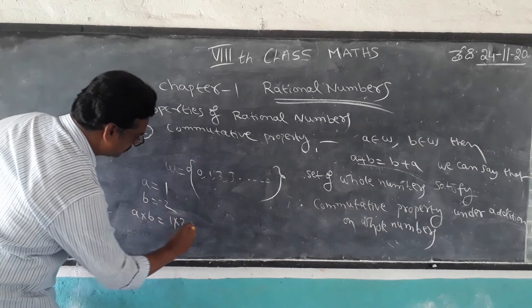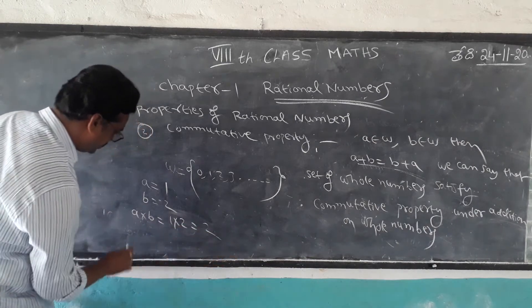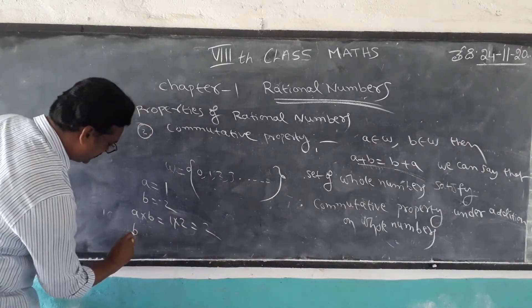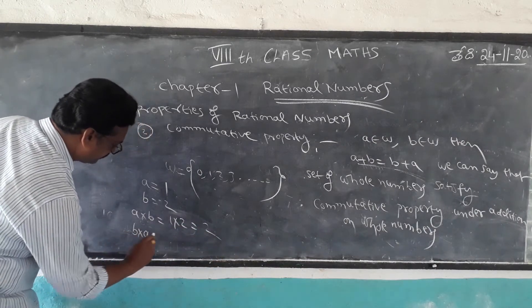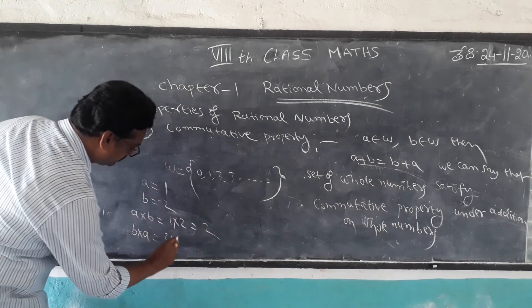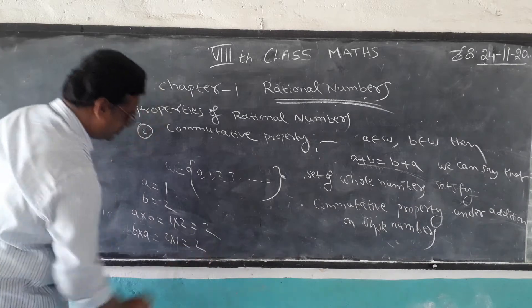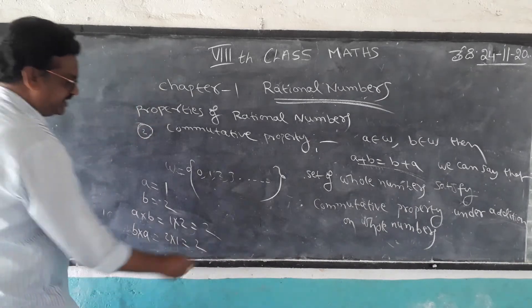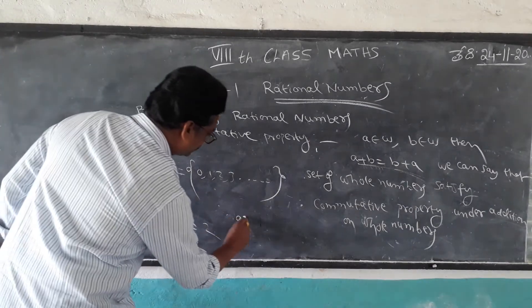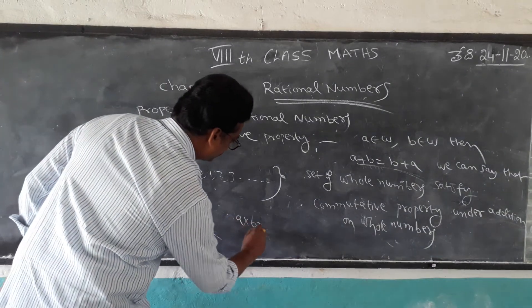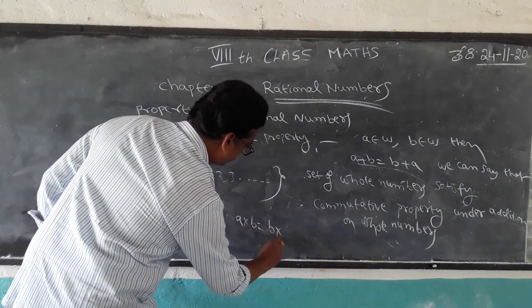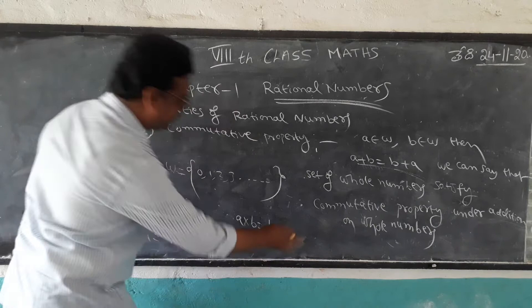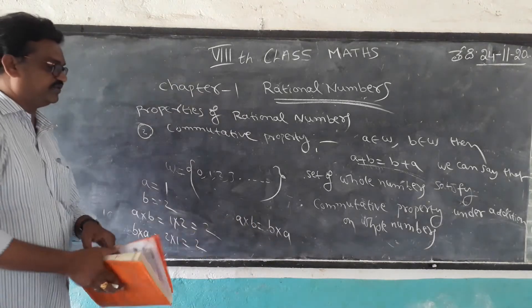For multiplication: 1 into 2 is equal to 2. Find B into A: 2 into 1 is equal to 2. A into B equals B into A, which is also 2. Therefore A into B equals B into A.